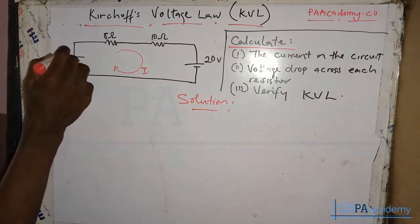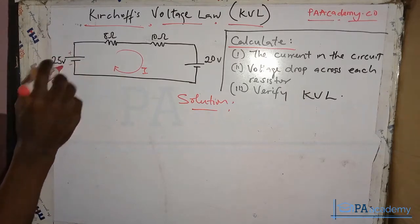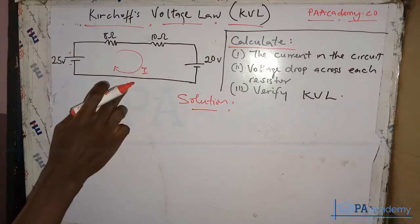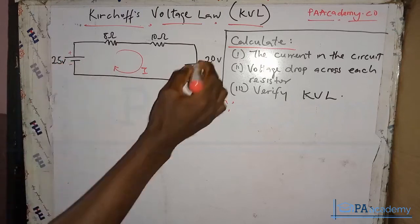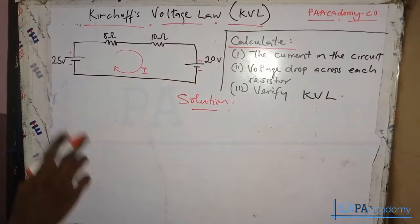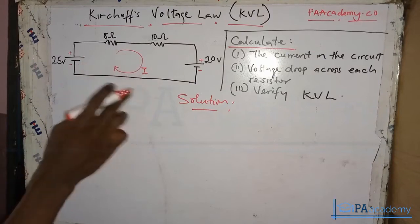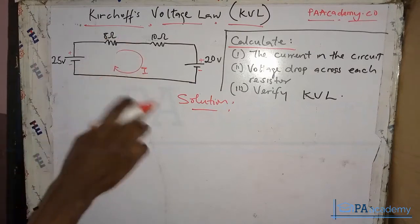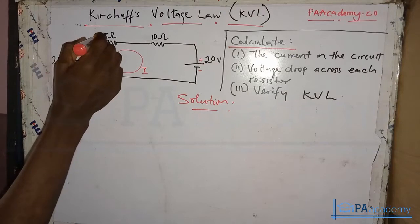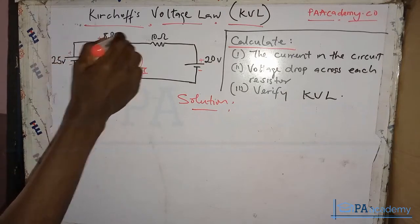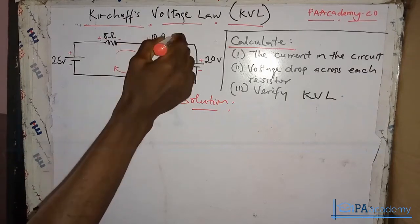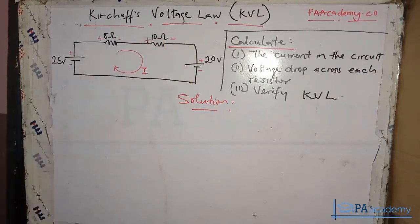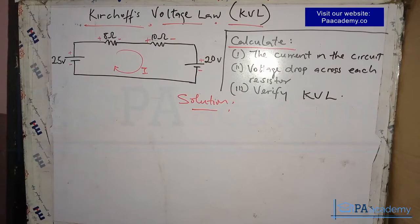For the voltage source, the polarity is not influenced by the direction of the current — the longer side is positive and the shorter side is negative. So here this is plus and this is minus. For other elements, the current moves from positive to negative based on its direction. So for the 8-ohm resistor in this direction it will be plus to minus, and for the 10-ohm resistor similarly positive to negative.